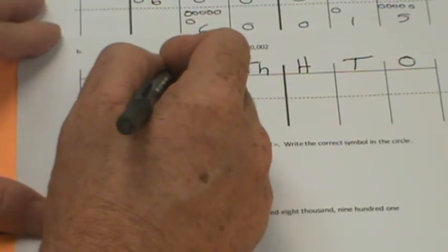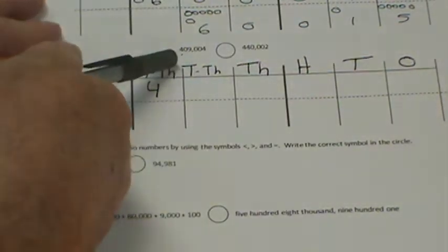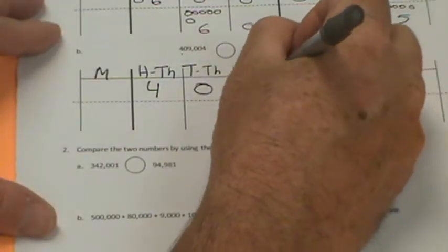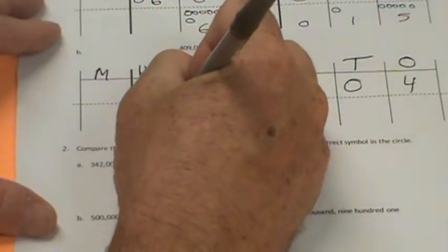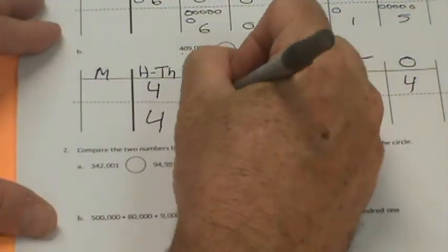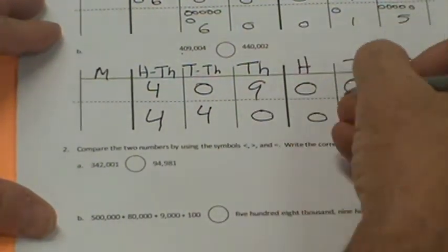So we have 409,004, zero ten thousands, nine thousands, zero hundreds, zero tens, and four ones. Let's look at the other one: four hundred thousands, four ten thousands, zero thousands, zero hundreds, zero tens, and two ones.